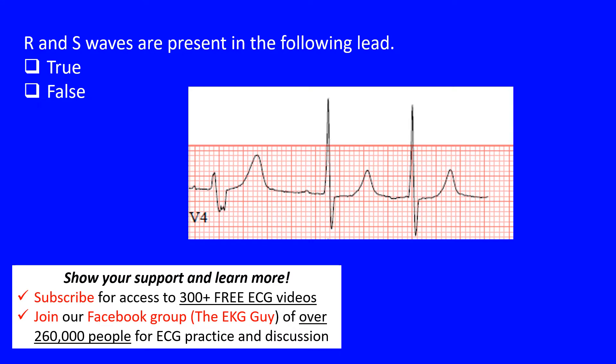So here we have a true or false question. Even if you don't know the answer to it, you have at least a 50% chance of getting it right. The question states: R and S waves are present in the following lead — true or false. The lead we're looking at here is V4.